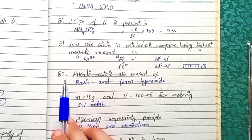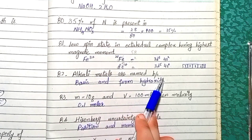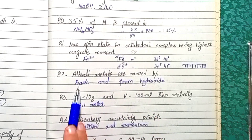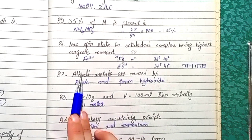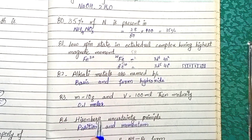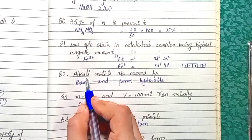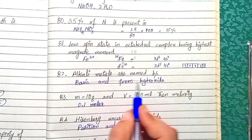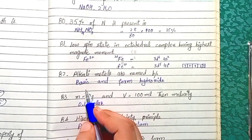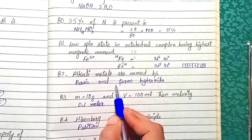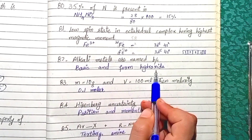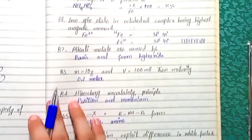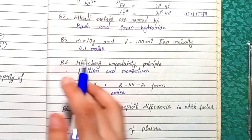Question 82: Alkaline metals are named so because their oxides are basic. Alkaline metals are themselves basic; their oxides and hydroxides are also basic. They are called alkaline because they are basic in nature and mostly form hydroxides.